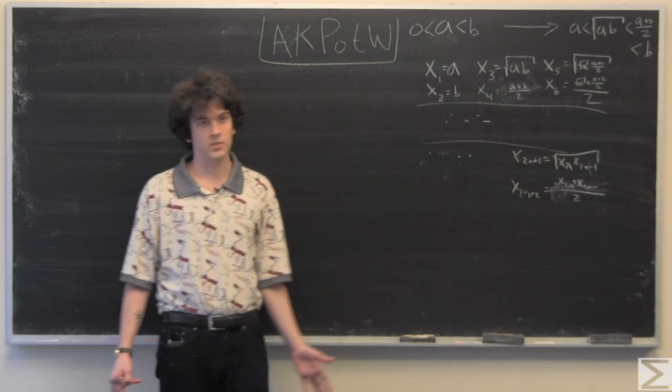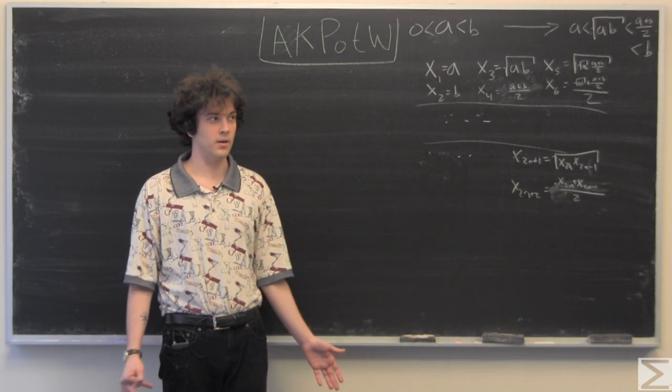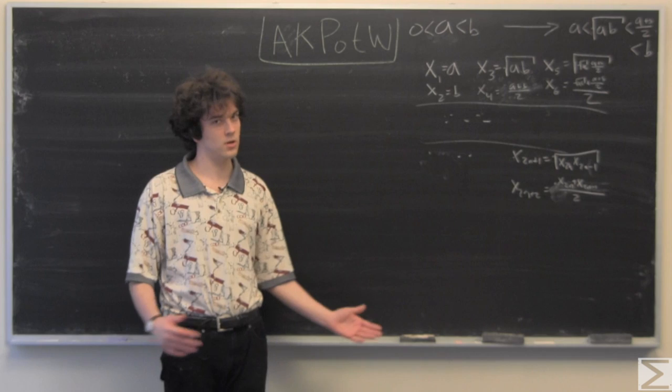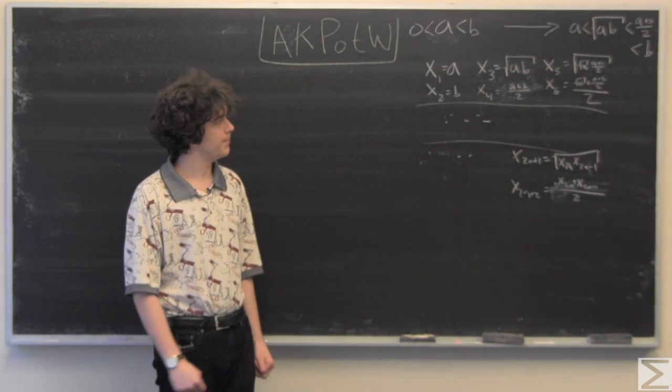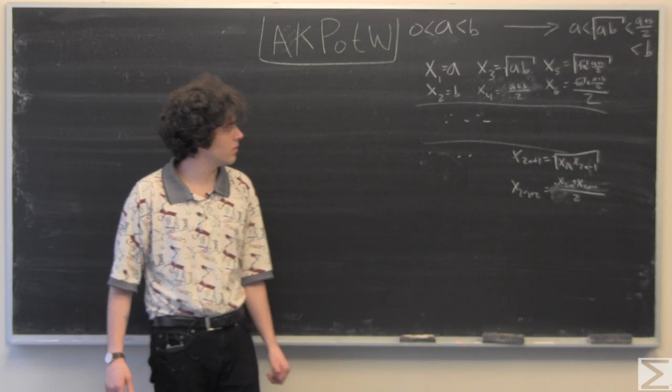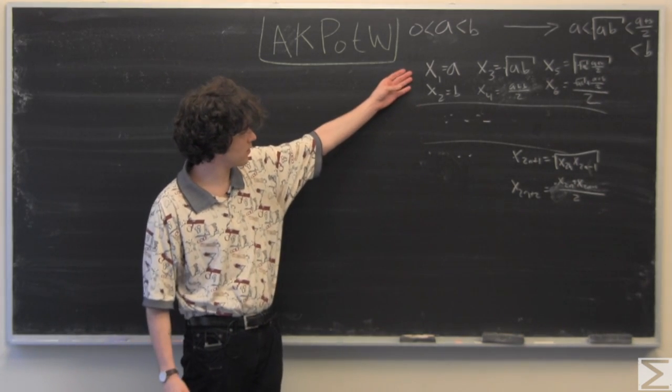This is a special case of the arithmetic geometric mean inequality, which we solved last week, where a and b are ordered. So we are also given that x1 equals a.